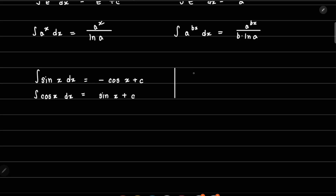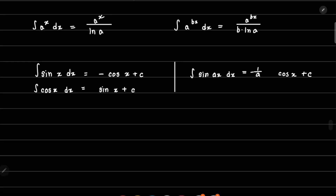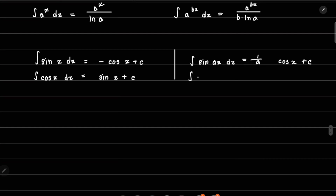If we have a constant in front of x, the integral of sin(ax) dx is minus 1 by a times cos(ax) plus C, and the integral of cos(ax) dx is 1 by a times sin(ax) plus C.